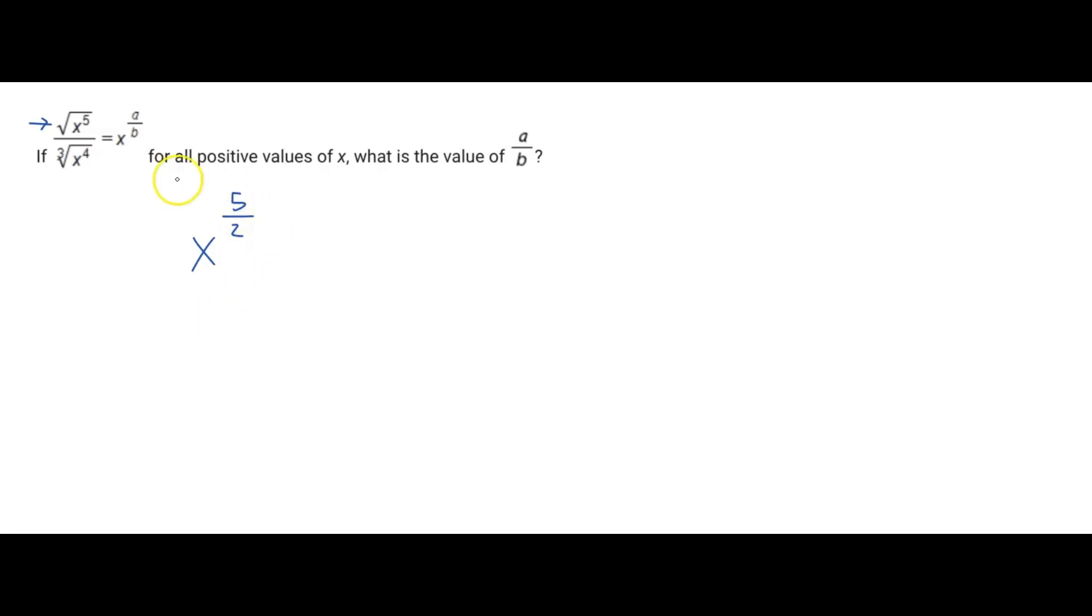Because in the denominator, that's just the index of the radical, and then whatever's under that square root or the power of the base goes in the numerator.